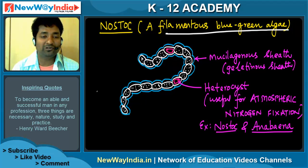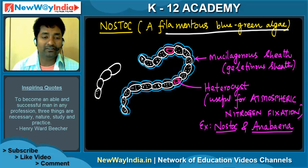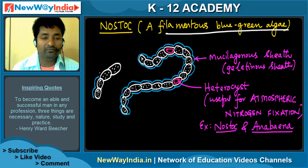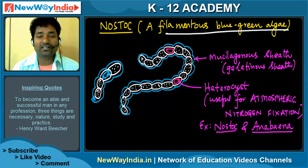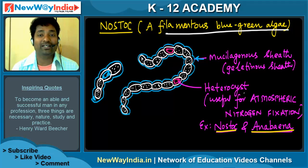For the diagram of nostoc, you can draw it as elongated circles extending in a chain, surrounded by small particles and a gelatinous membrane. Here and there you have to place heterocysts. These nostoc filaments are covered by a mucilaginous sheath on top, and the heterocysts are useful for atmospheric nitrogen fixation. Examples are nostoc and anabaena — these two are very important to remember for your exams.